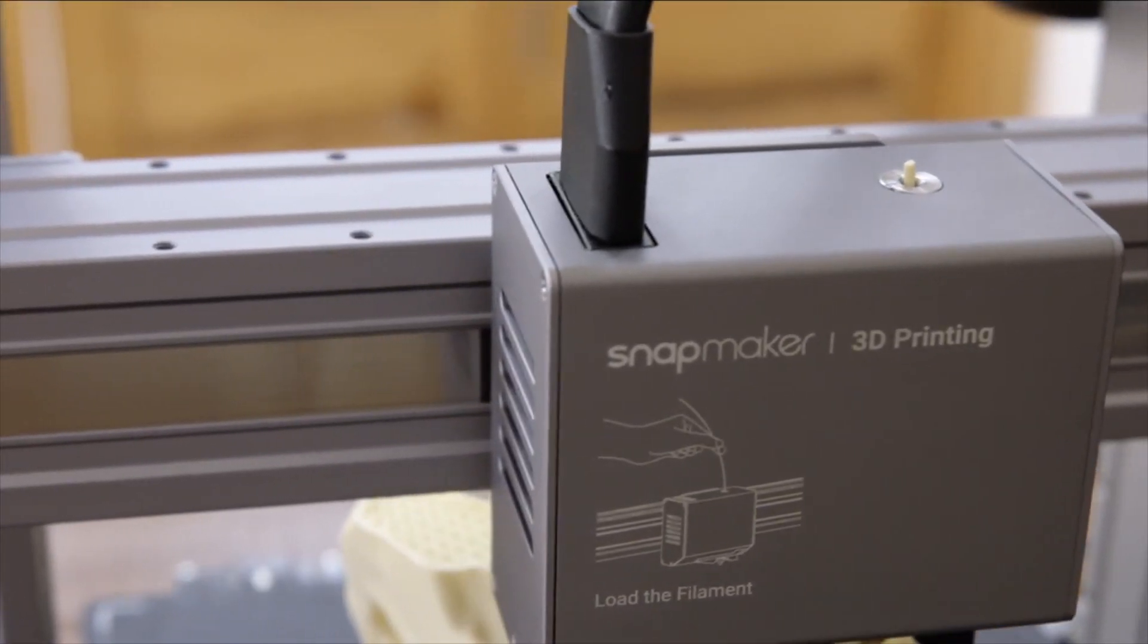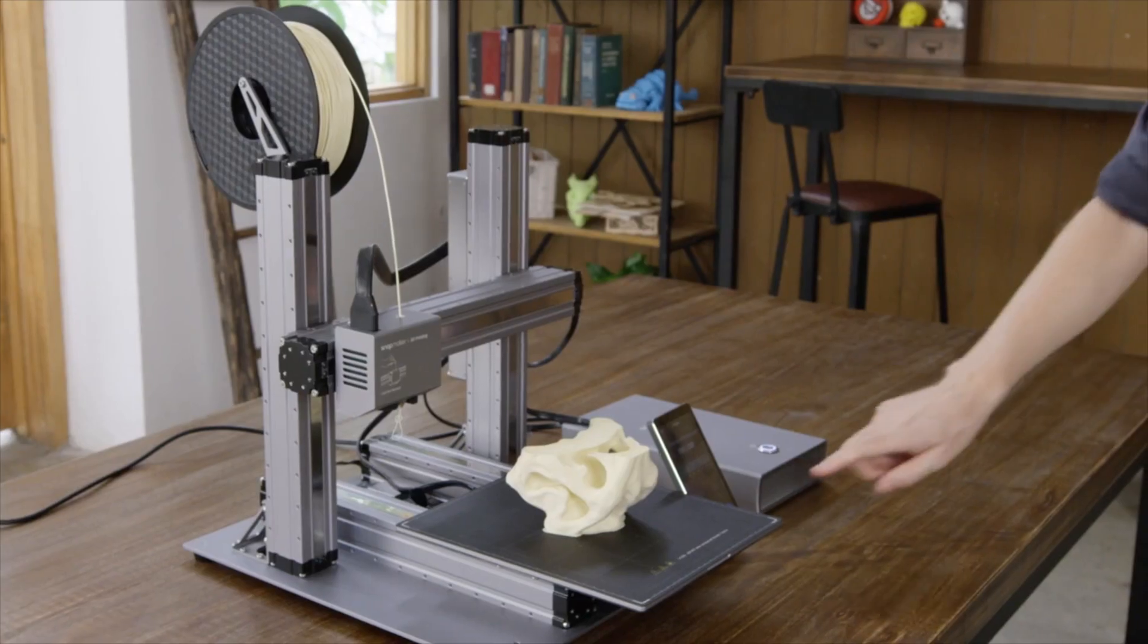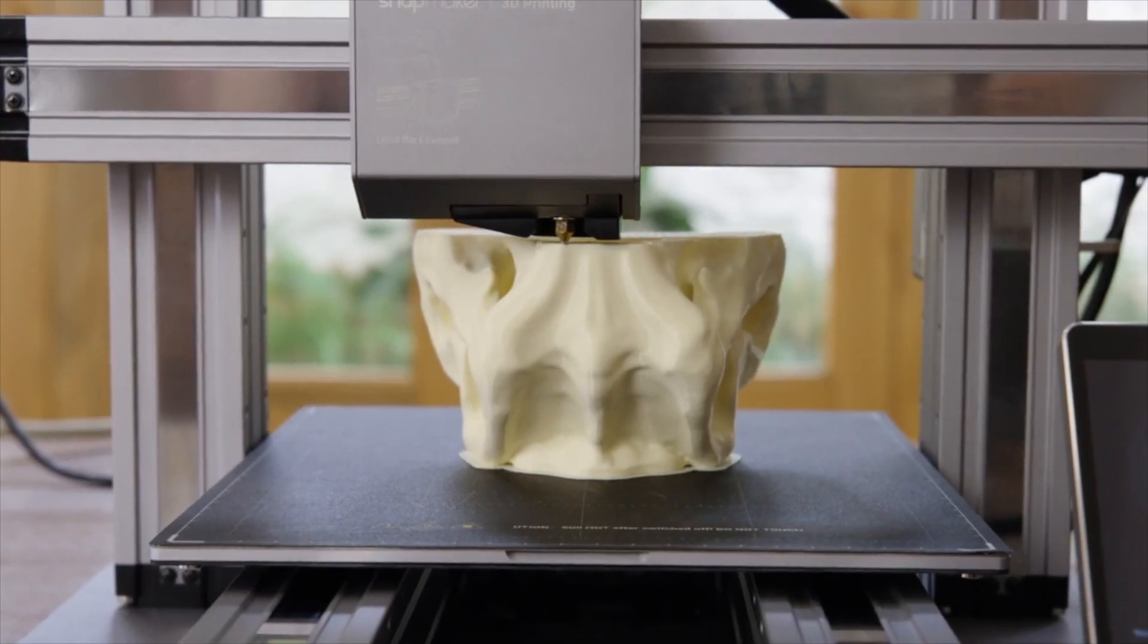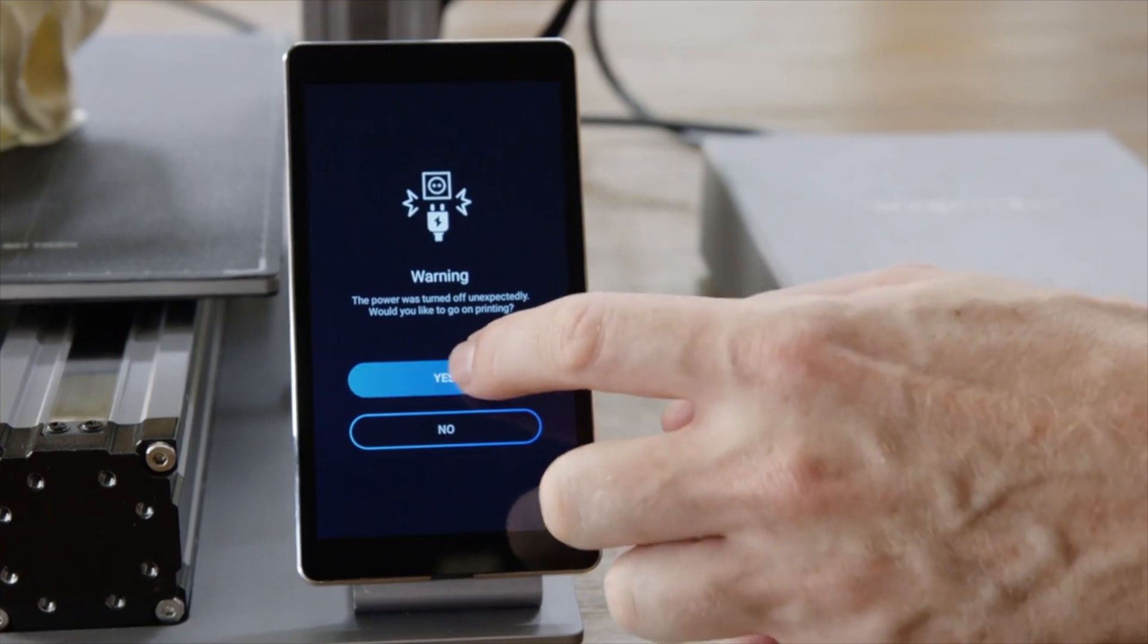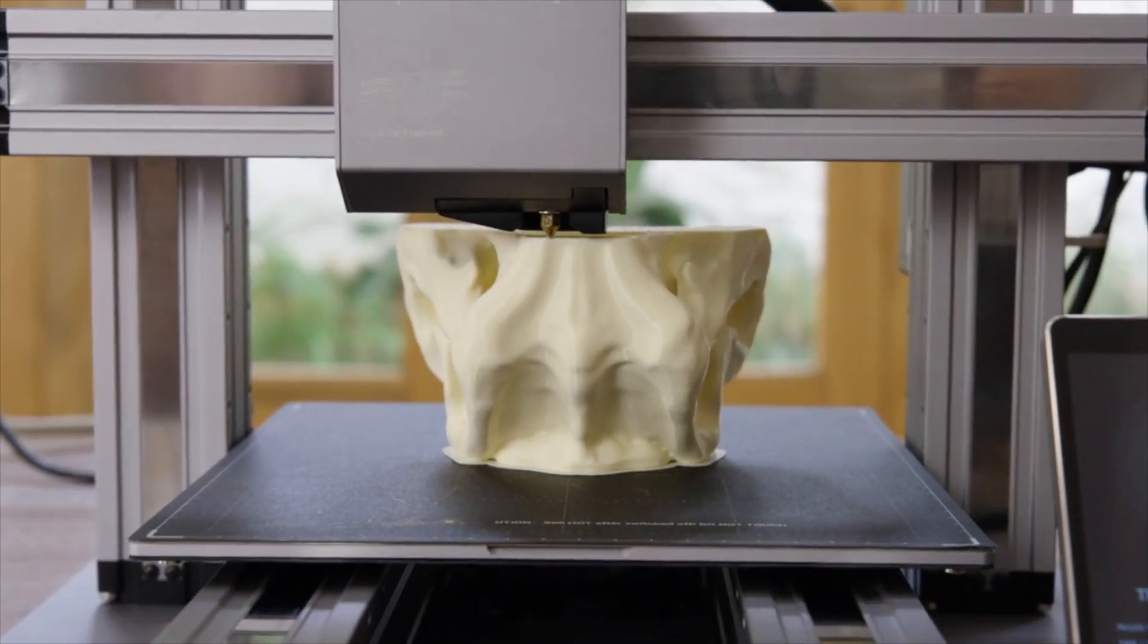If the filament runs out Snapmaker will pause and notify you to load new filament. It can also detect power loss and resumes exactly where it left off so you can recover any project.